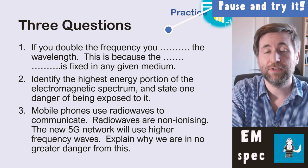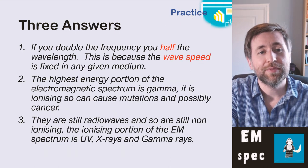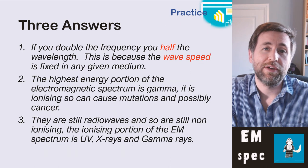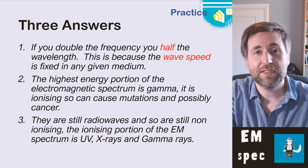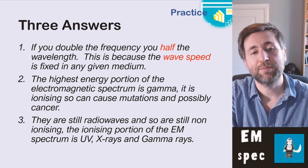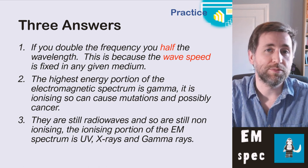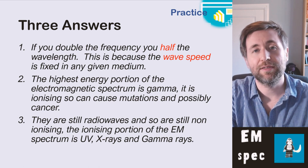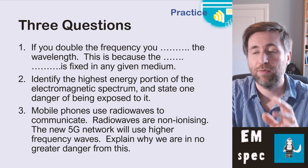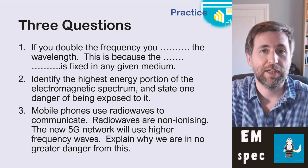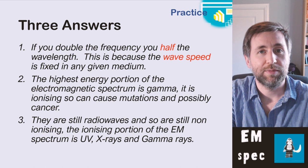Here are three questions — feel free to pause the video and have a go. Remember: if you double the frequency, you halve the wavelength, because the wave speed is fixed in any given medium. The highest energy portion of the electromagnetic spectrum is gamma, and it's ionizing, so it can cause mutations and possibly lead to cancer. Exposure to radiation can also kill cells.